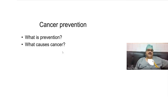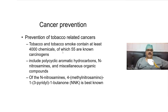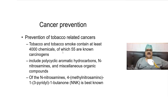Now moving to cancer prevention. Prevention means preventing the cancer from developing. Most preventive actions depend upon what causes cancer — if you know the cause, you remove it and cancer can be prevented. Starting with tobacco, almost 50% of the cancers in India are tobacco-associated. Tobacco smoke is a mixture of more than 4,000 chemicals, of which there are more than 55 known carcinogens, including polycyclic aromatic hydrocarbons (PAH), nitrosamines, and NNK, which is the best-known carcinogen.